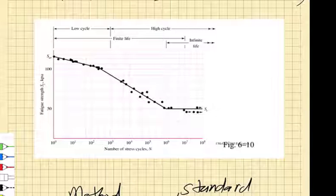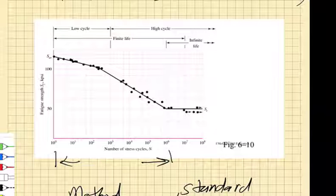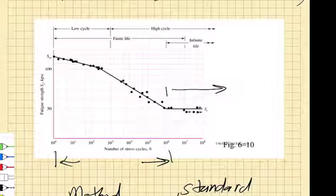I identified two really important basic regimes: the finite life regime, where we go all the way up to, say, 10 to the 6 cycles, and then we have the infinite life regime for those materials that experience an endurance limit.